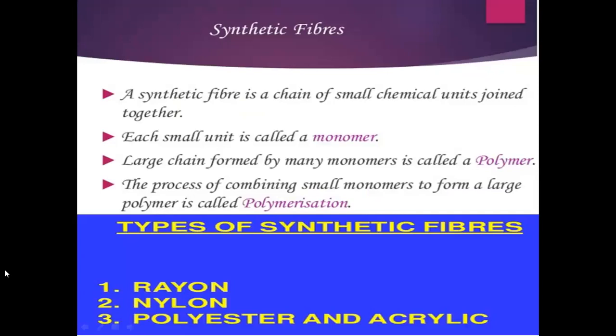A synthetic fiber is a chain of small chemical units joined together. Each small unit is called a monomer, and when monomers join together to form a large chain, we call it a polymer. The process of joining small monomers to make a large polymer is called polymerization.